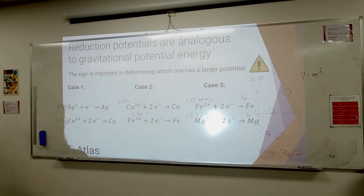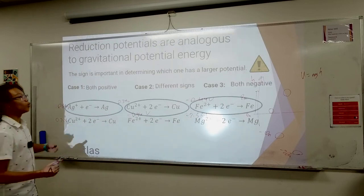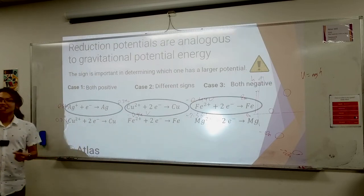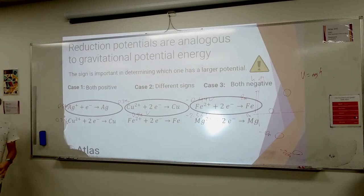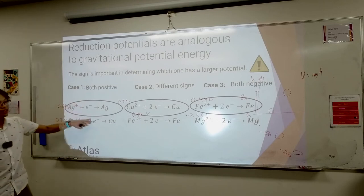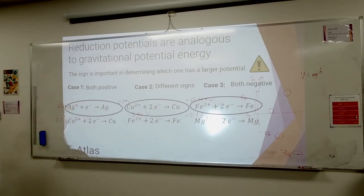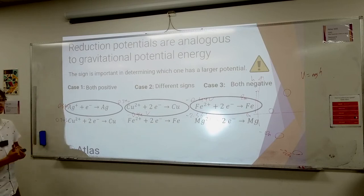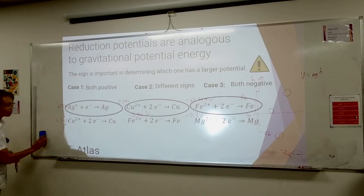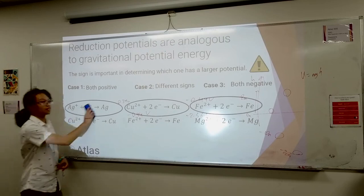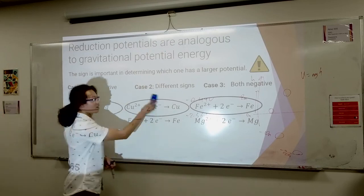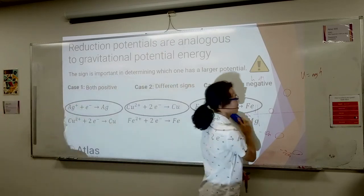What's the reduction potential for the magnesium half-reaction? Negative 2.36 volts. Same question: who is going to reduce? Same logic - just like a ball at minus 10 meters underground versus minus 20 meters underground, who has higher gravitational potential energy? Still minus 10 - it's closer to a positive number. Same logic here: I don't care about the minus sign, it's still more positive than the other. So the conclusion is I can take any two half-reactions, think intuitively about reduction potential, and predict who reduces and who oxidizes.